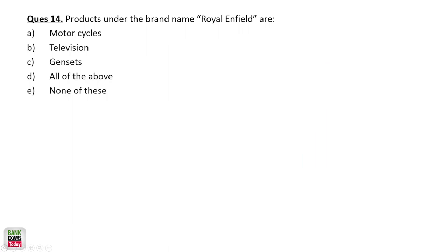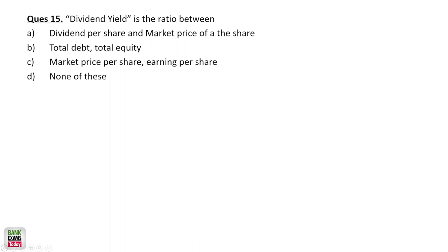Royal Enfield is a brand name of Eicher Motors and it is a motorcycle. What do you mean by dividend yield? Dividend yield is dividend per share in a year divided by the market price of the share — that gives you the dividend yield ratio, which could be 2%, 3%, 1%, etc.